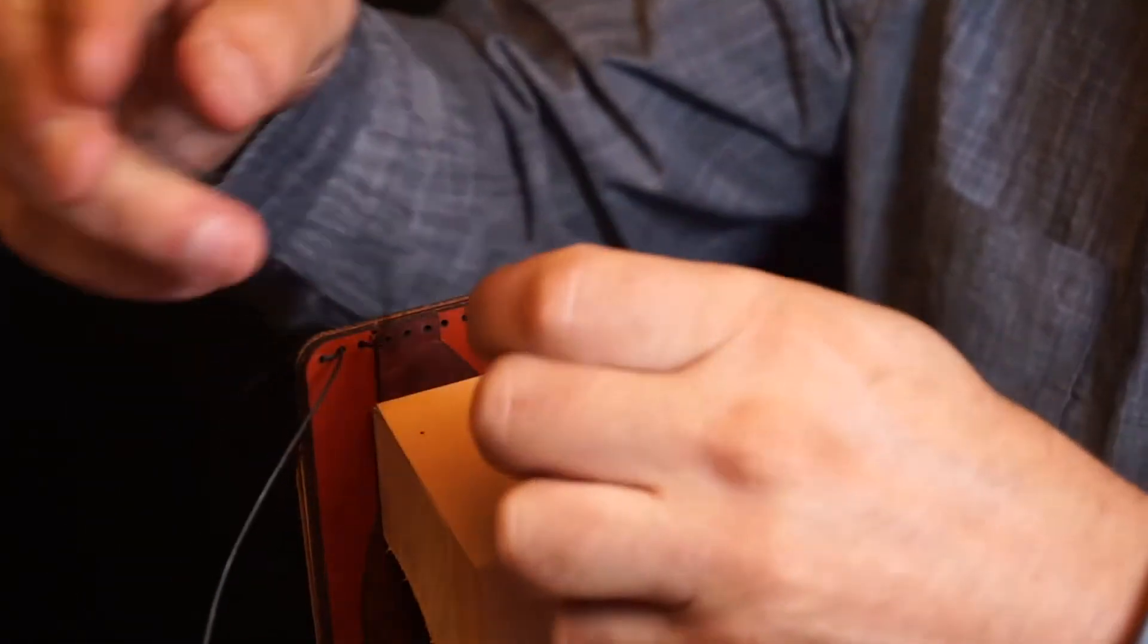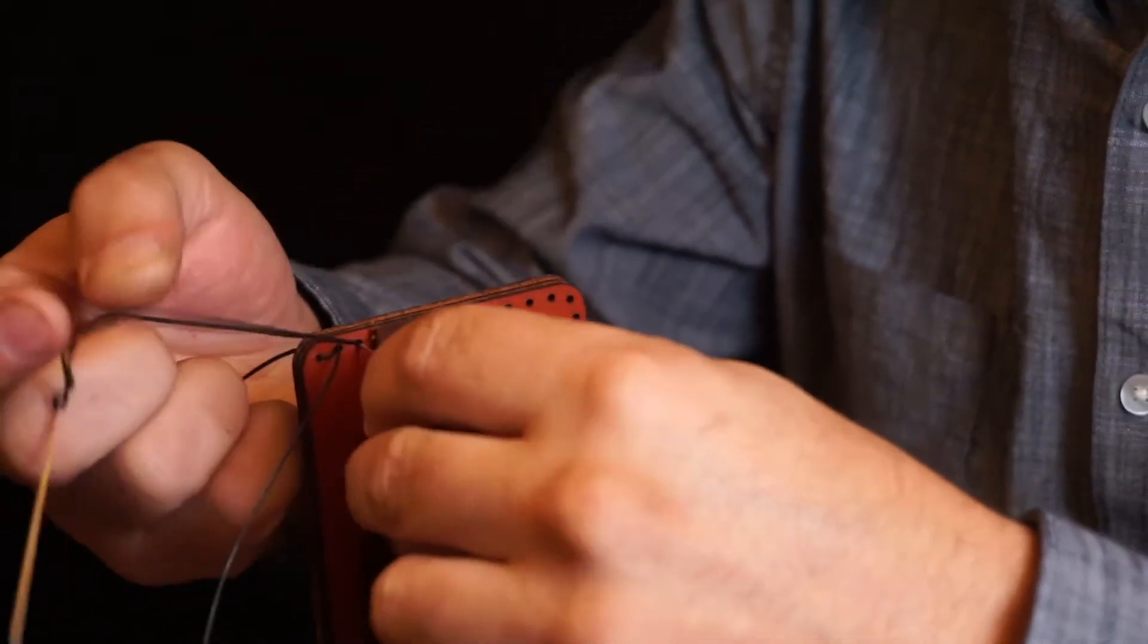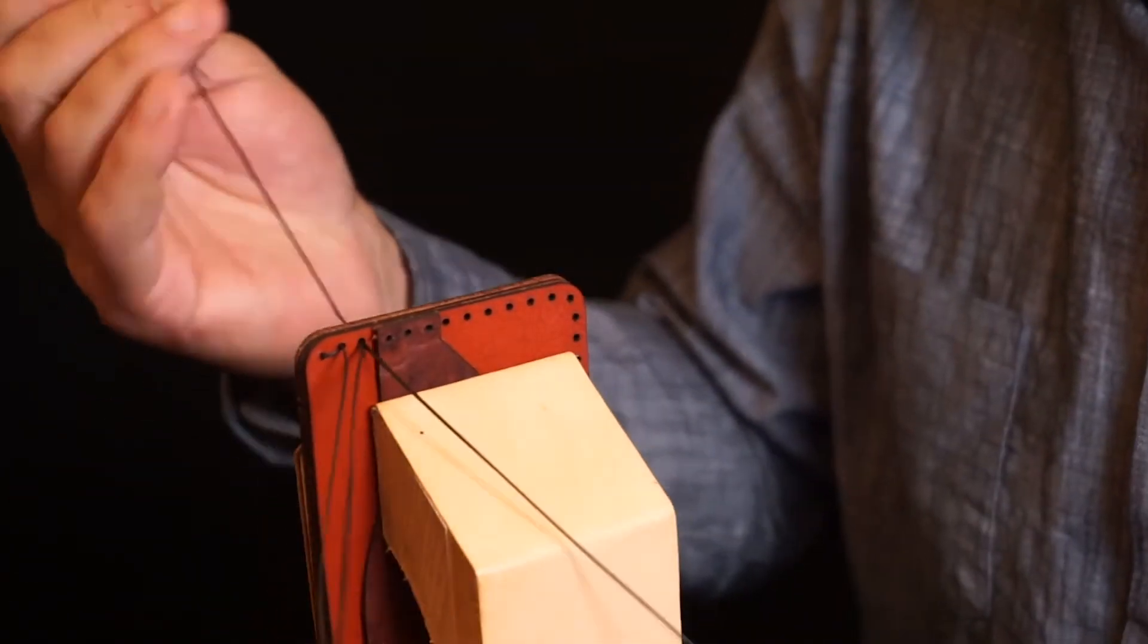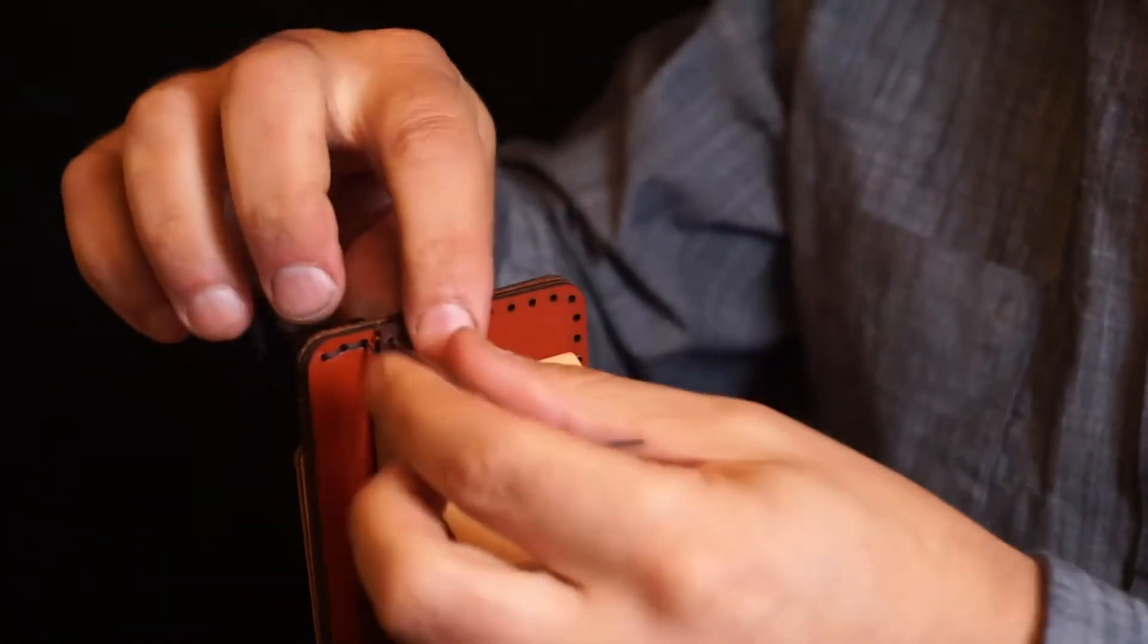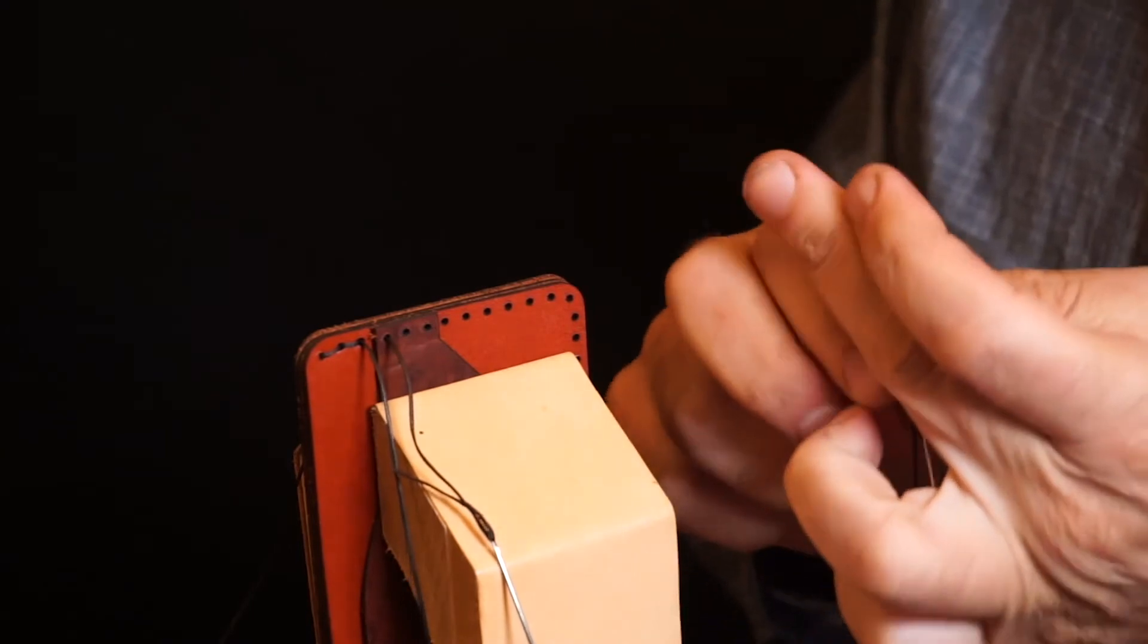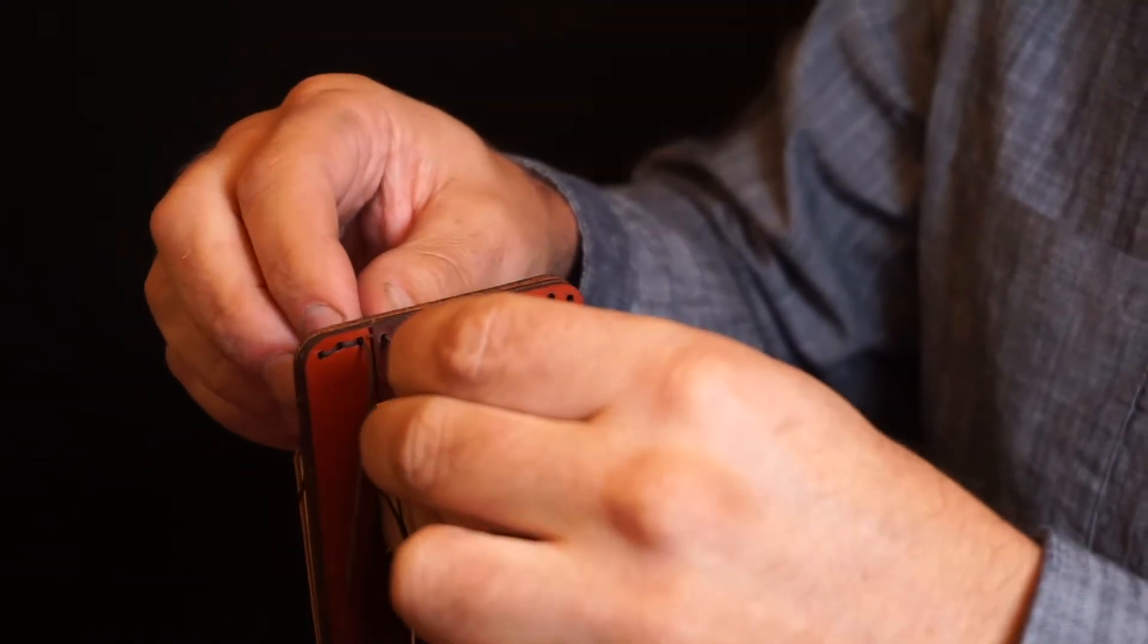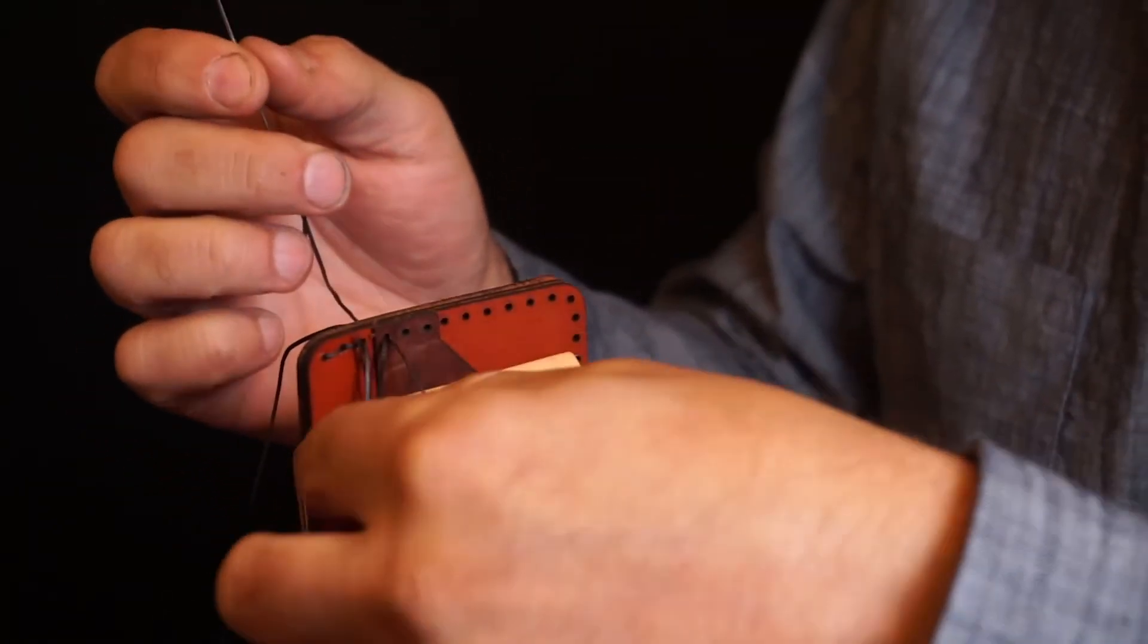Pull those threads nice and snug. First needle through. Pull that thread back. Second needle through. And pull snug. At this stitch, we are adding the top card pocket to the stitching line. Again, be sure to keep those stitches nice and snug to prevent lifting. A couple more stitches, and we'll add in the last piece of leather.